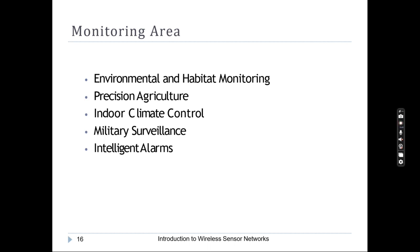Indoor climate control is another example — at home, lighting, cooling systems, and air quality can all be monitored. Actuators can take desirable actions. For instance, an AC set to 15 or 20 degrees Celsius need not run at that level continuously — if the room environment reaches the desired cooling phase, it will automatically switch on or off. Military surveillance and intruder detection also fall under this category, along with intelligent alarms.